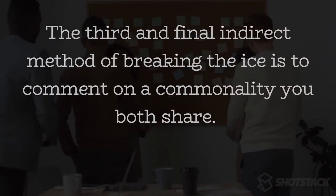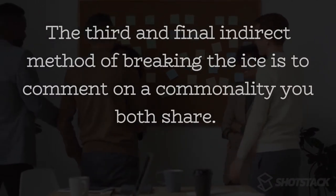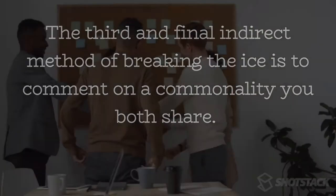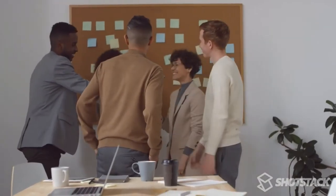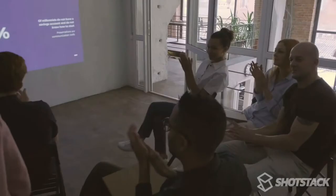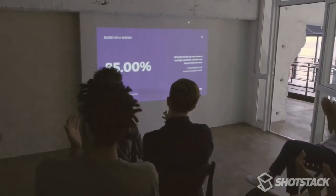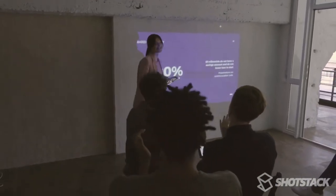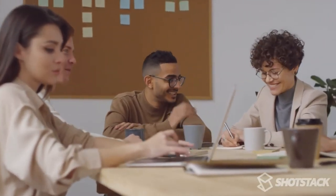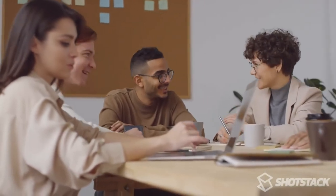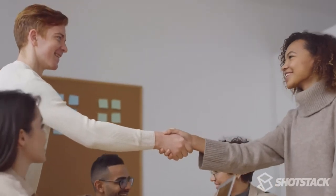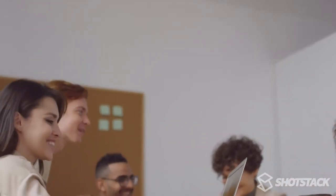The third and final indirect method of breaking the ice is to comment on a commonality you both share. For instance, why are you both at your friend Jack's apartment? What business brings you both to this networking conference in Tallahassee? What stroke of misfortune brought you to the DMV this morning? So, who do you know here? So, how do you know Jack? Has Jack told you about the time he went skiing with his dog? The idea with these commonalities is that they are instant topics of conversation, because there will be a clear answer behind them.